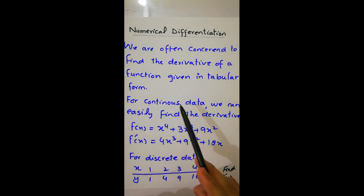For continuous data, we can easily find the derivative of a function. Let's say a function is given f(x) = x^4 + 3x^3 + 9x^2.